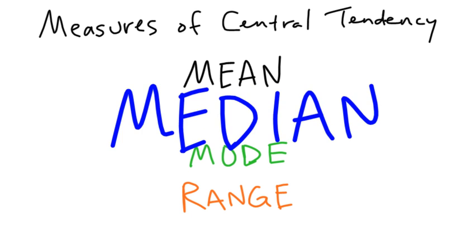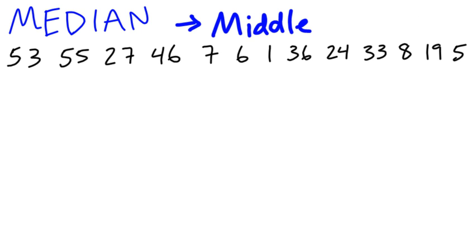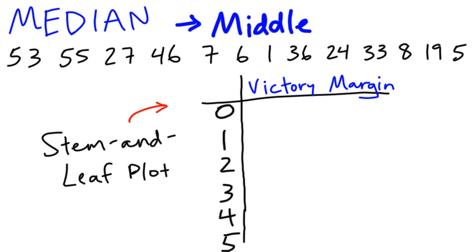Now we're going to look at median. Median is basically the middle. So let's take that same data, and what we want to do is put it in some kind of order. We're going to put it in a stem and leaf plot. Here you can see we have these — they call these the stems — and the leaves will go in this area right here.